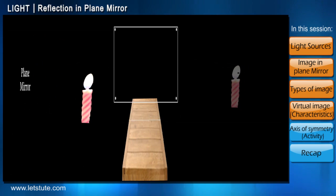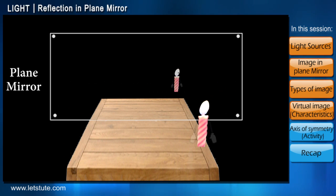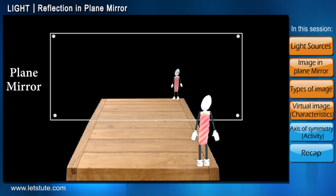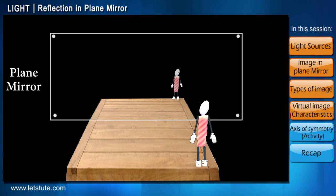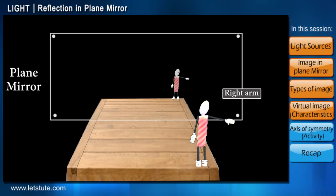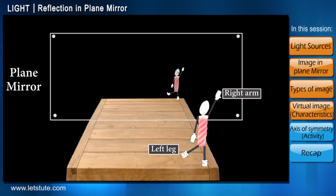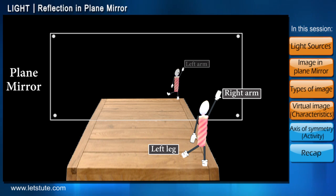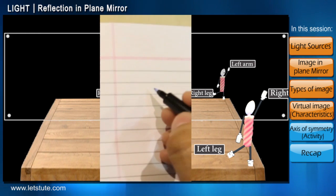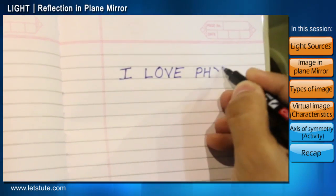The next property is quite interesting. Let's give the candle a pair of hands and legs. The image will have them too. Let's make the candle strike a pose by raising his right arm and left leg, and compare this to the mirror image formed. We see that the image strikes the same pose but with the opposite hand and leg.